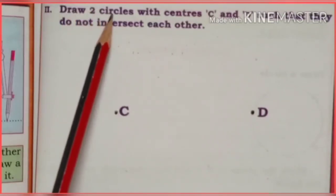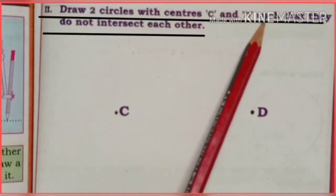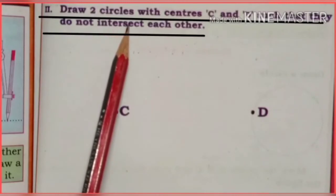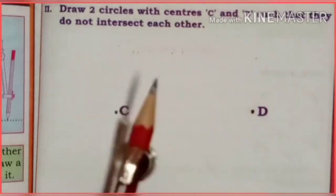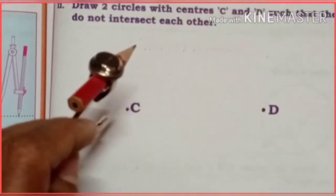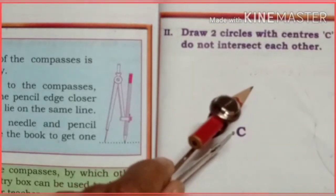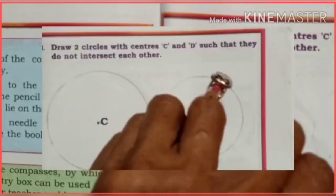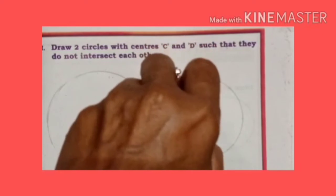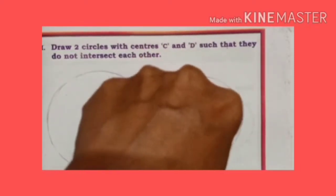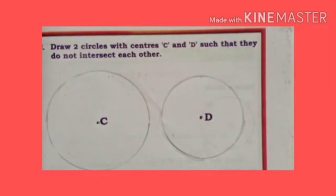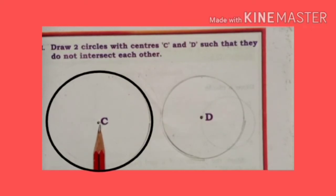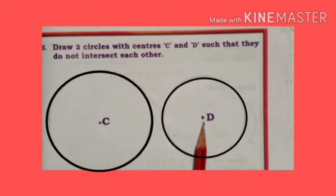Draw two circles with centers C and D such that they do not intersect each other. Take a compass and draw them. We get C as the center point of one circle and D as the center point of the other circle.